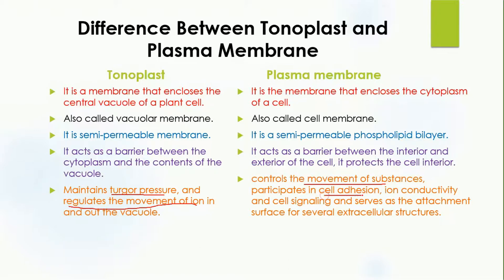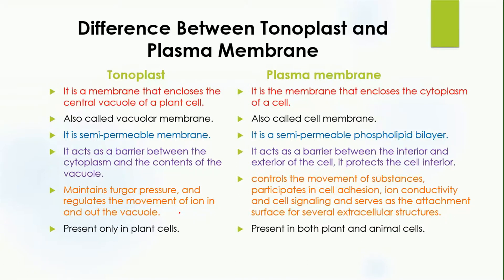The plasma membrane controls the movement of substances and is involved in cell adhesion, ion conductivity, cell signaling, and it also serves as the attachment surface for several extracellular structures. Compared to the tonoplast, the functions of the plasma membrane are very broad, while the tonoplast is mainly concerned with water pressure and the movement of small molecules or ions.